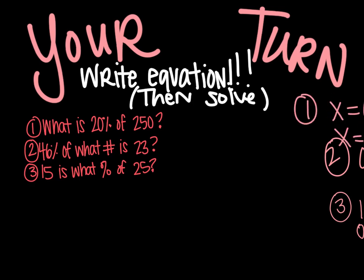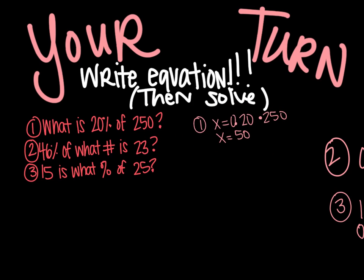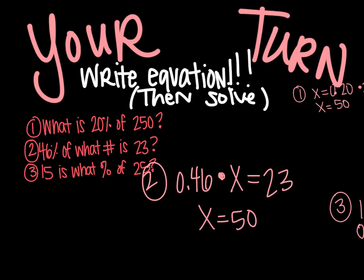All right, here are your answers. To number 1, you have the equation x equals 0.20 times 250. And then you just plug that in in your calculator. Since x is already by itself, you get an answer of 50. If you got that right, star it. If you got it wrong, circle it.